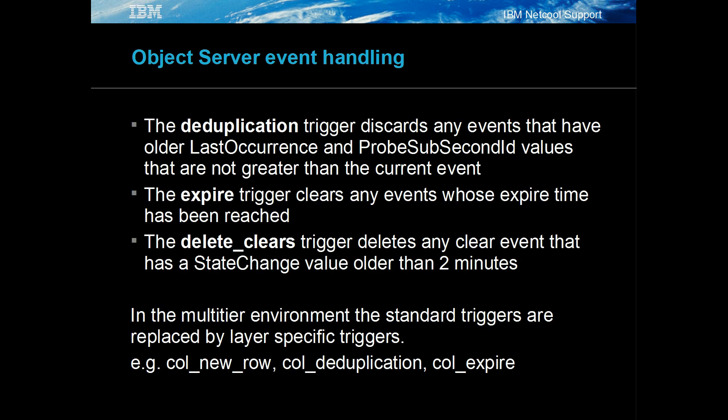The object server uses three main triggers to handle generic clear events. The deduplication trigger discards incoming events with lower last occurrence values than the current event held in the object server. The expire trigger clears events whose expire time is reached based on the event's last occurrence and its expire time. The delete_clears trigger deletes cleared events based on their state change value.